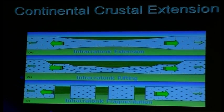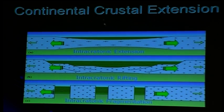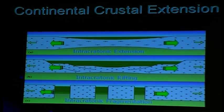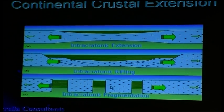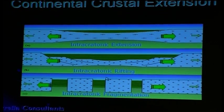Continuing on with that extension process, we then get into a continental scale where we get a break-up of this and fragmentation to form the modern continents and the modern oceans, the modern ocean basins, and then migration.